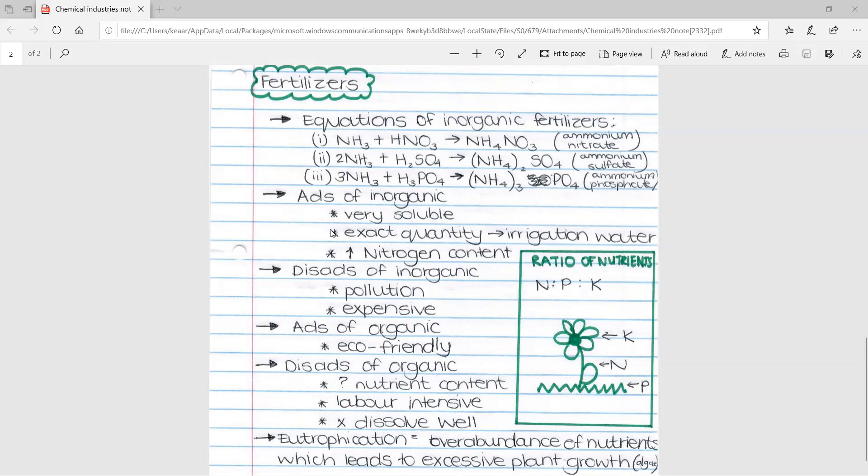The second is you can measure out the exact quantity of each fertilizer and know its specific nutrient content and dissolve it into irrigation water. And it can be used to water the plants.